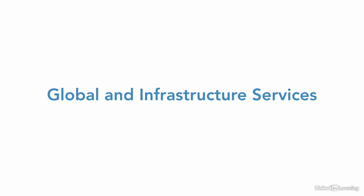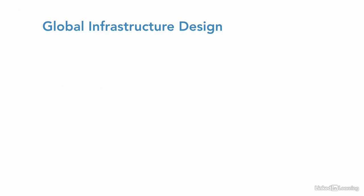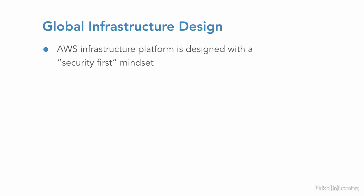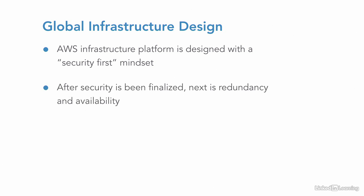When we look at our design within our AWS account for the infrastructure that we're going to create at AWS, we have to consider the global availability of the services and actually where you want to be hosting your resources. Regardless of where you start, the infrastructure that's offered to you is designed with security first. That's the first thing they're going to consider: is it secure? Once security has been defined, finalized, tested, and approved,